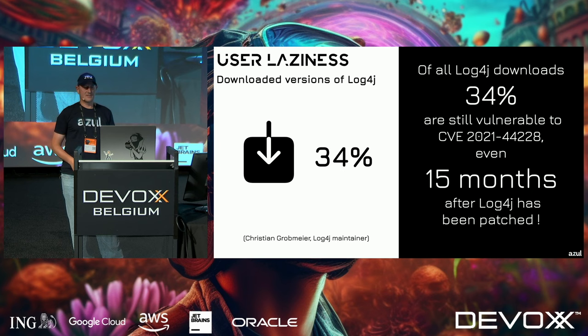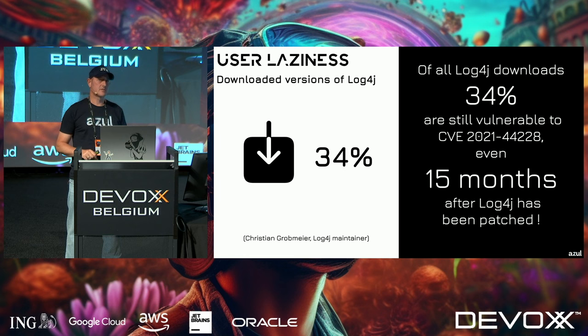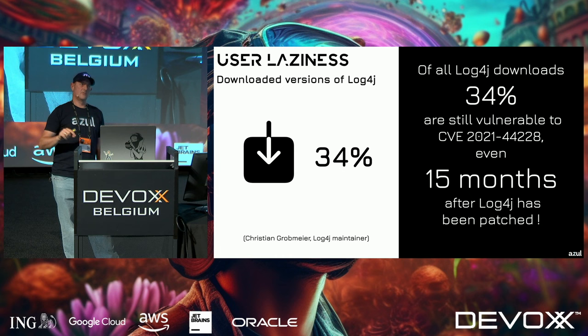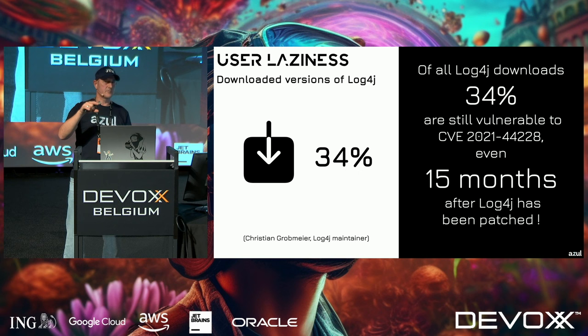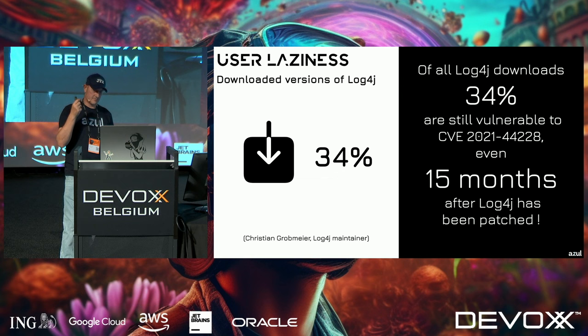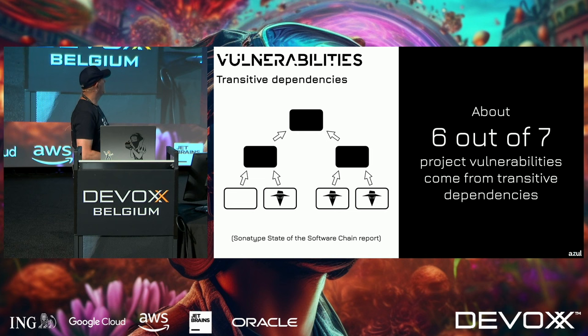I spoke with Christian Grobmeyer, a Log4j contributor. As of March this year, 34% of Log4j downloads were still the vulnerable version — even though it had been fixed 15 months earlier. It's now down to about 27%, but that's still a lot. If you download something, make sure it's a secure version.